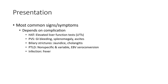Signs and symptoms depend on the complication. HAT presents with elevated liver function tests. Portal vein stenosis causes GI bleeding, splenomegaly, and ascites. Related to restriction: jaundice and cholangitis. PTLD signs are non-specific and variable.